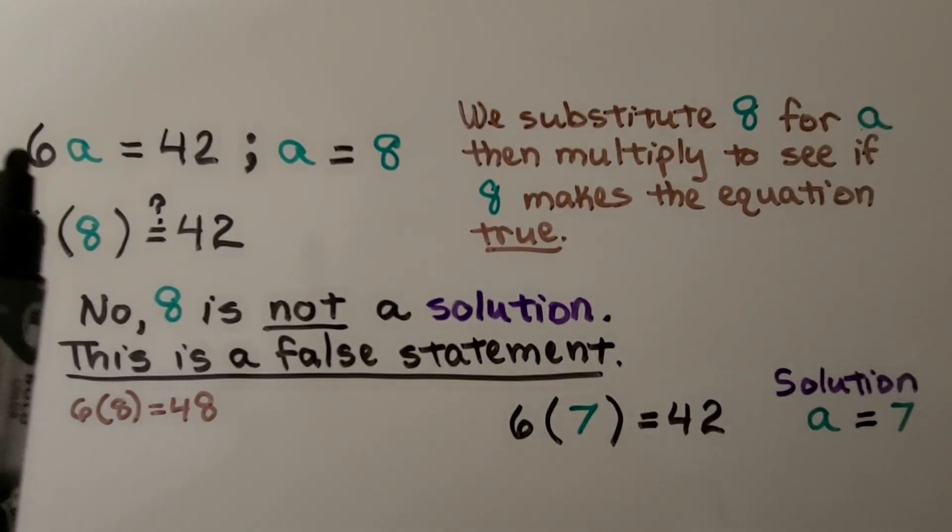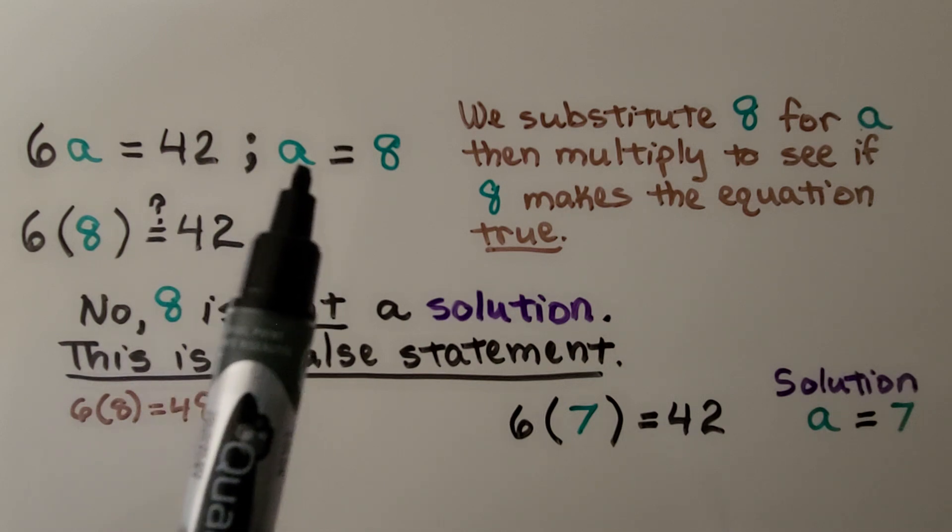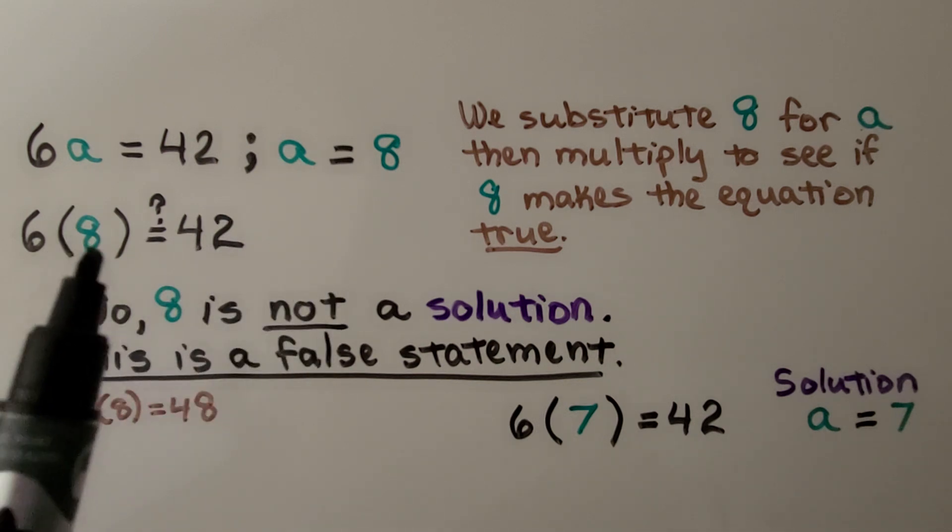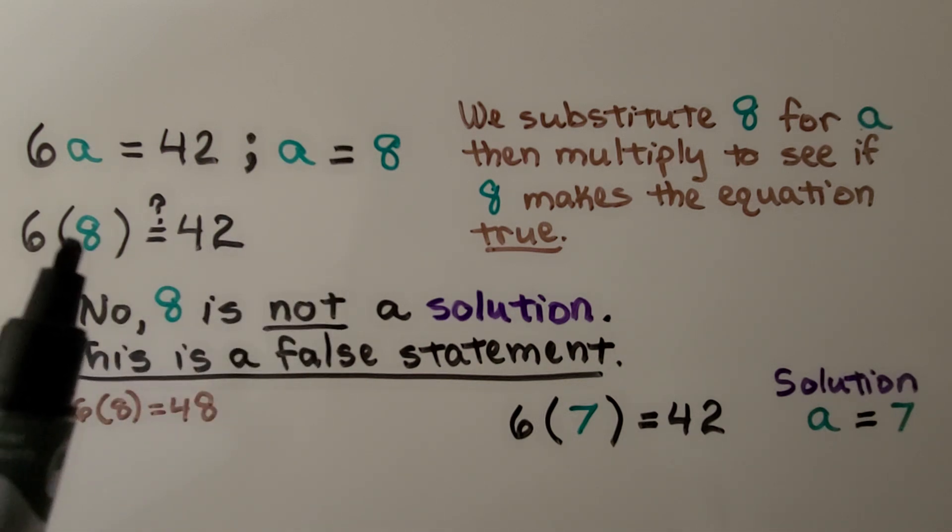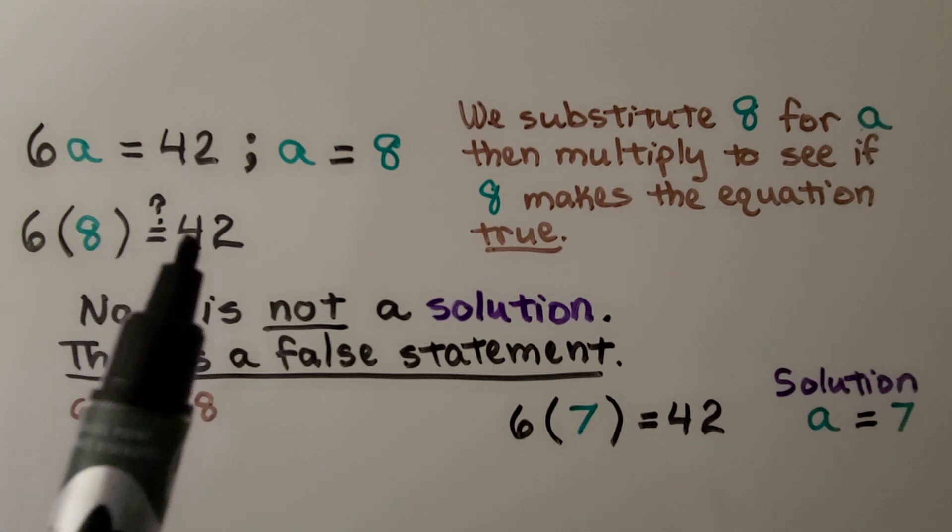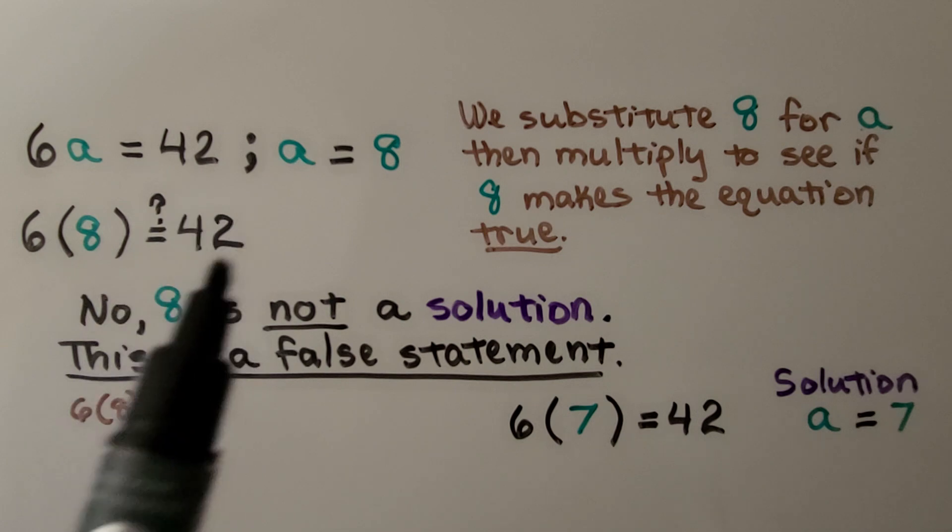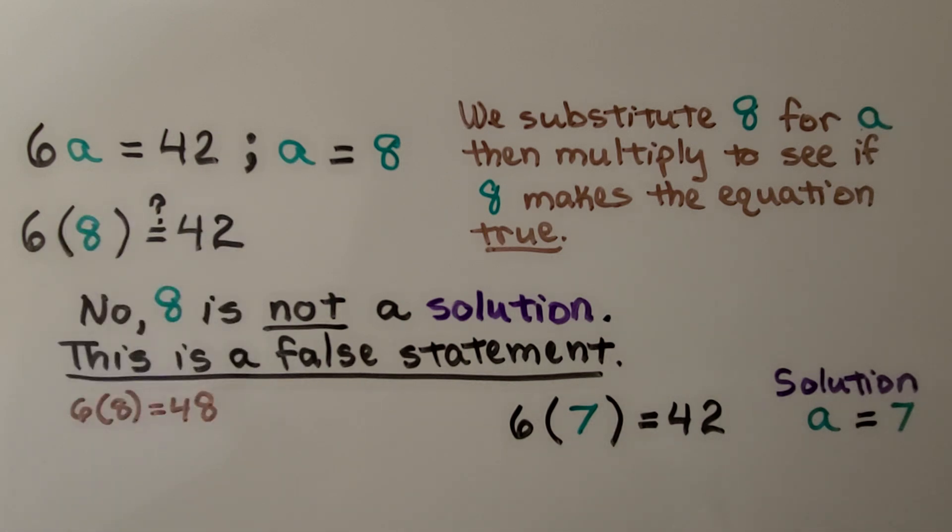Here we have six a is equal to forty-two, and it's given that a is equal to eight. We substitute eight for the a, then multiply to see if eight makes the equation true. Six times eight, is that equal to forty-two? No. Eight is not a solution. This is a false statement. Six times eight is equal to forty-eight. Six times seven is equal to forty-two. The solution is that a is equal to seven.